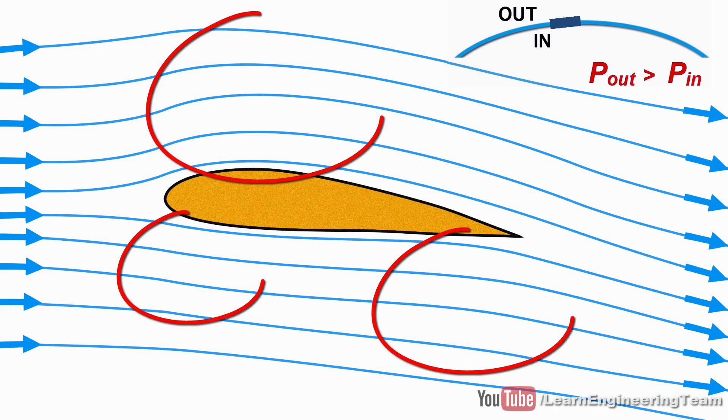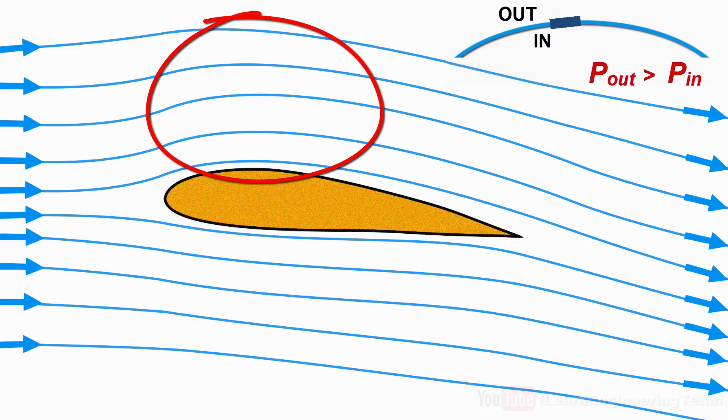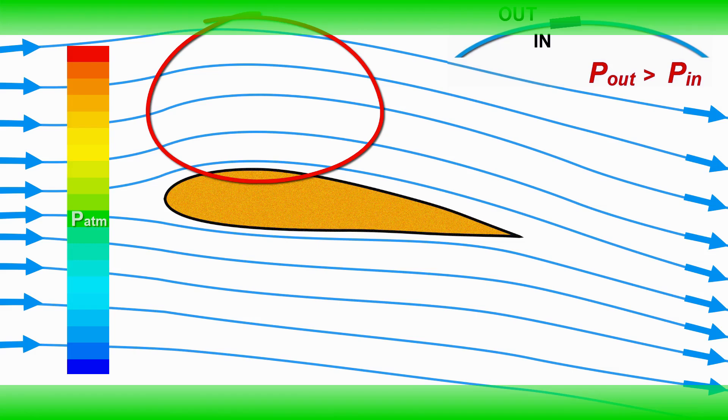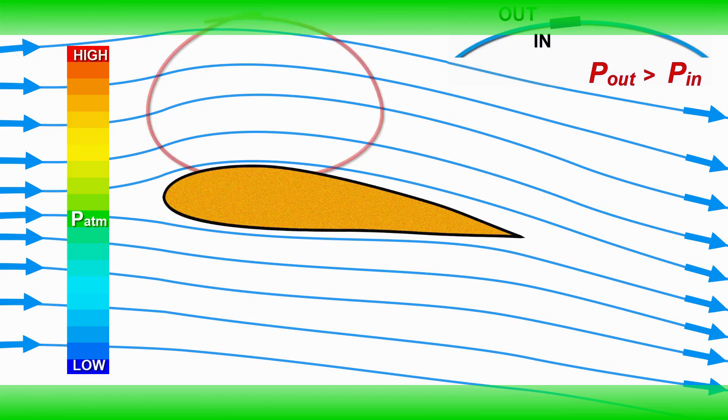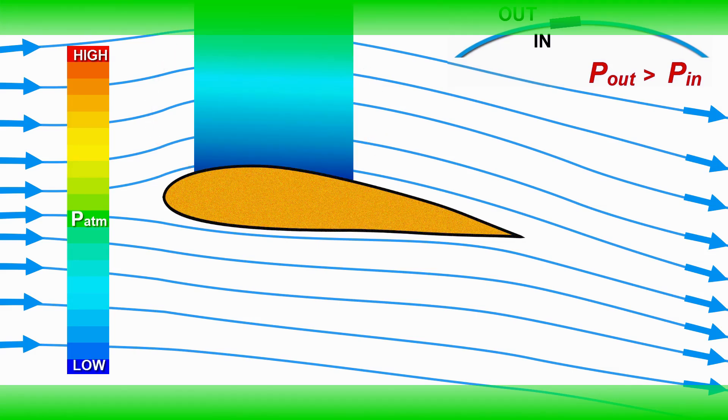There are three main flow curvatures in this flow. The biggest is at the top of the airfoil. Far away from the airfoil, the pressure is atmospheric. So, due to this high curvature, pressure will decrease as we move toward the airfoil.